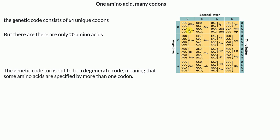For example, leucine is coded by six codons: UUA, UUG, CUU, CUC, CUA, and CUG. If any one of these codons is translated, we get the amino acid leucine. So there are six different codons all coding for one amino acid — this is why the genetic code is described as degenerate.